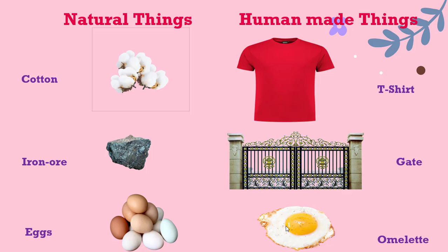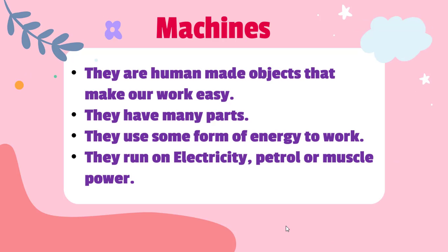I hope you got the difference between natural things and human made things. Now let us see what are machines. Machines are human made objects that make our work easy. Previously people used rickshaws, which took a lot of human energy. Now as advancement has taken place, people have their own vehicles made up of machines, which make human work easy.